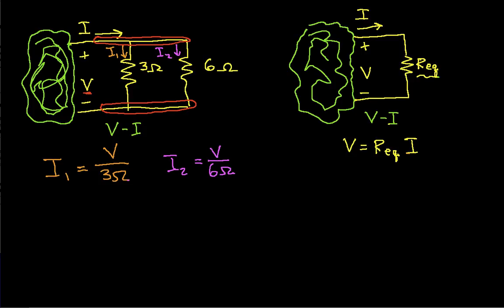Okay, now if we apply Kirchhoff's current law to the top node, we have the current I going in, and that's equal to the sum of the currents leaving, which in this case would be I1 plus I2. Okay, and so we can use these two expressions for I1 and I2 that we've just developed to say that this is going to be V over 3 ohms plus V over 6 ohms. And now we can factor out this V from both terms as V times 1 over 3 ohms plus 1 over 6 ohms.